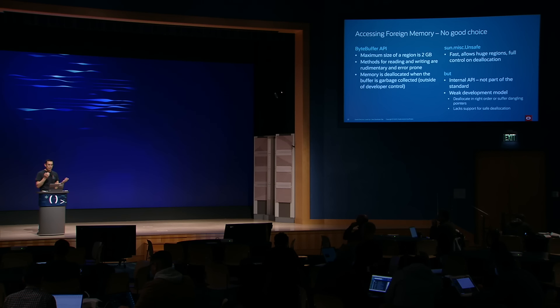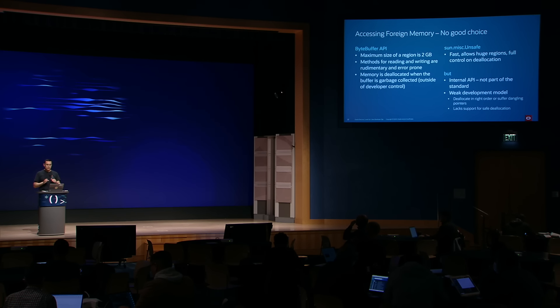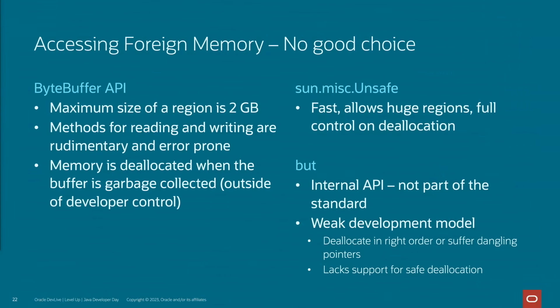Historically, there are two ways to access foreign memory. There is the supported way, which uses ByteBuffer, and there is the hacky way using sun.misc.Unsafe. ByteBuffer is limited to two-gigabyte size regions, which used to be large enough but nowadays isn't — you probably have systems where you need to access more than two gigabytes. There is also the problem that if you use ByteBuffer, you can't really tell the JVM when to deallocate the memory — you're subject to whenever the garbage collector goes through it.